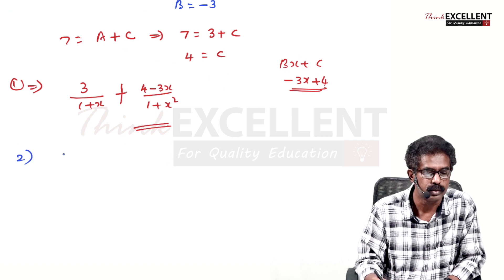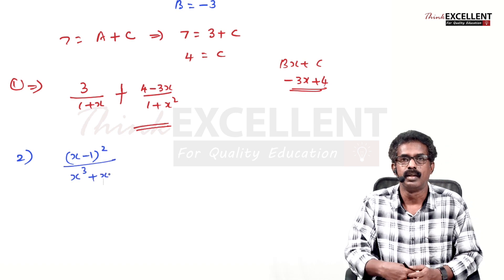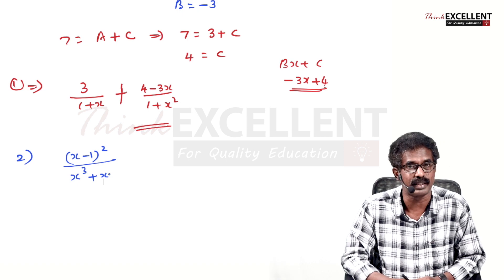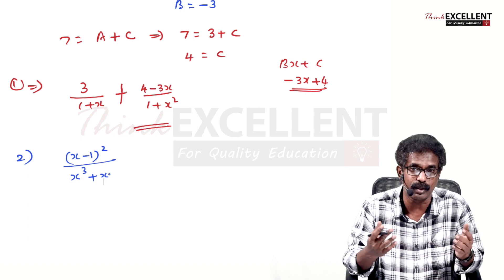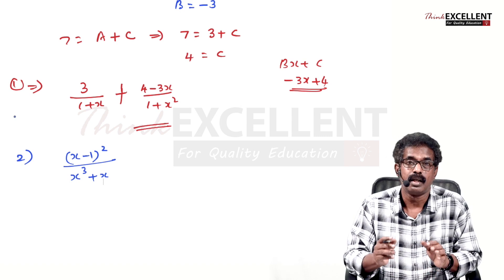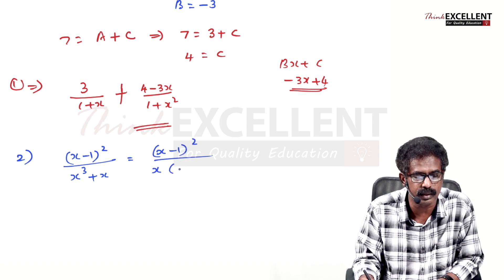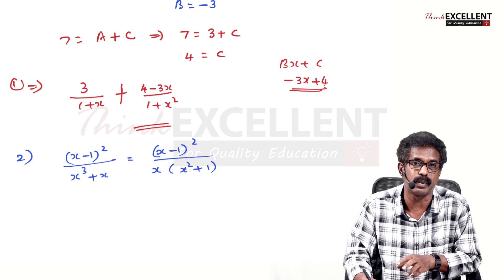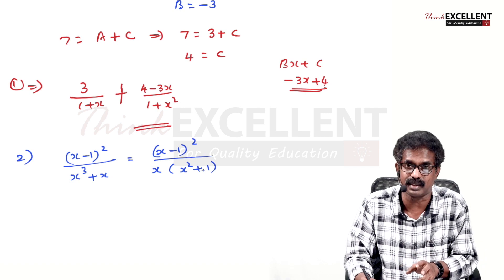Now another example: (x-1)² / (x³+x). First check: numerator degree is 2, denominator degree is 3, so it is a proper fraction. Now factorize the denominator - take x common to get x(x²+1). The factor x is linear, and x²+1 is quadratic and cannot be factorized. It's not a whole square either, so this is of the third type.